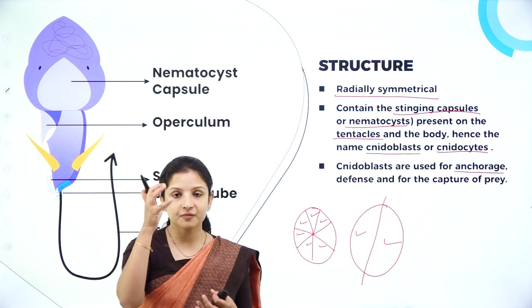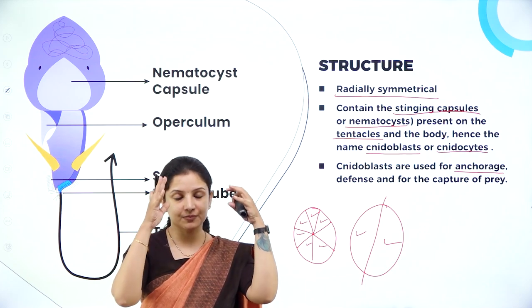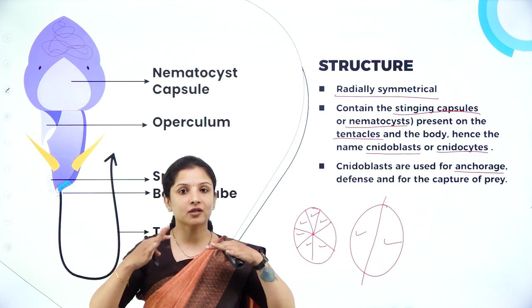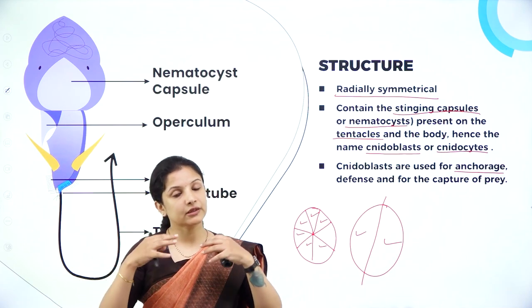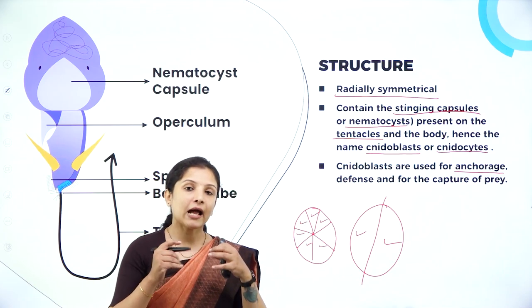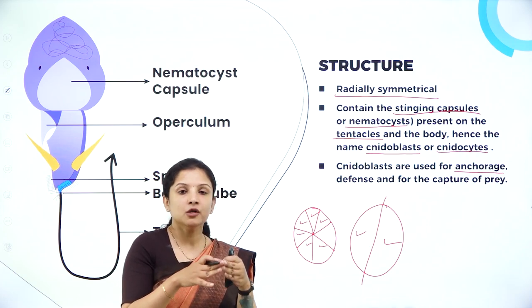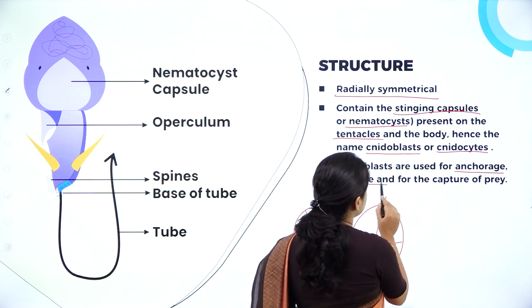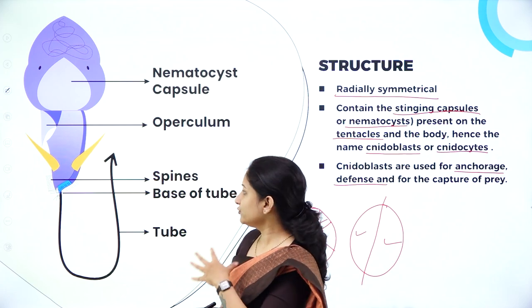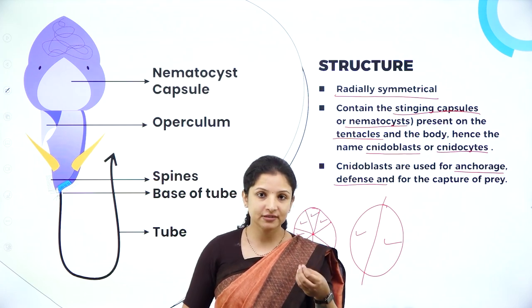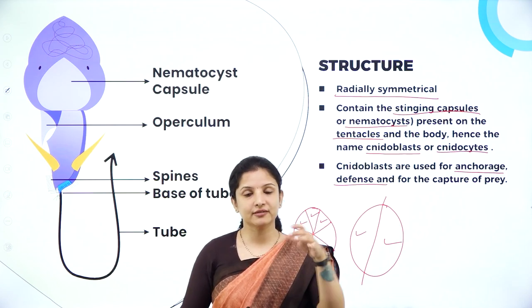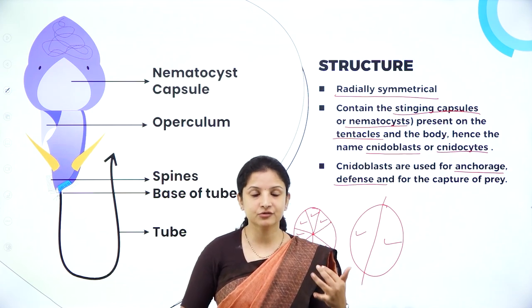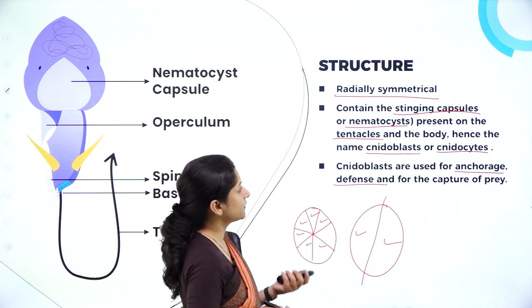Just like ships use anchors dropped into the ocean bed to prevent drifting, nidocytes or nidoblasts act like anchors, helping the organism fix itself to a particular place so it doesn't get washed away by ocean or sea currents. They also help in capturing prey: the nidoblasts are poison stinging capsules that inject venom into prey organisms, causing them to fall unconscious or become paralyzed so they can be easily caught and fed upon. These are the main functions of the nidoblast.